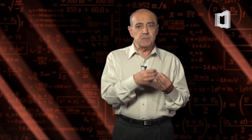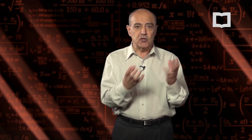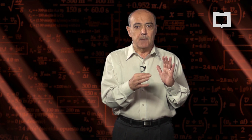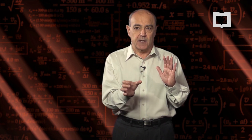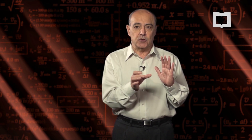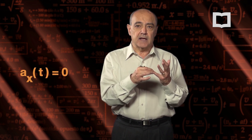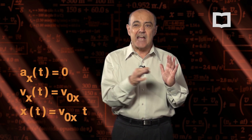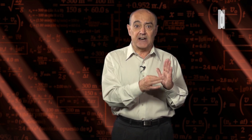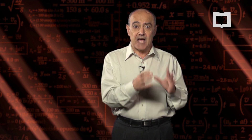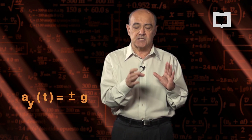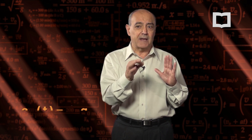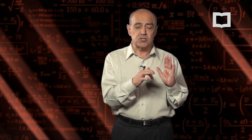Podemos pensar que el movimiento de tiro oblicuo es una combinación de dos movimientos. En la dirección horizontal X va a ser un movimiento rectilíneo uniforme: aceleración cero, velocidad constante, posición que evoluciona linealmente con el tiempo. En cambio, en la dirección vertical, como tiene una aceleración constante distinta de cero de 10 metros sobre segundo cuadrado, el signo va a depender de la elección arbitraria del sistema de referencia.